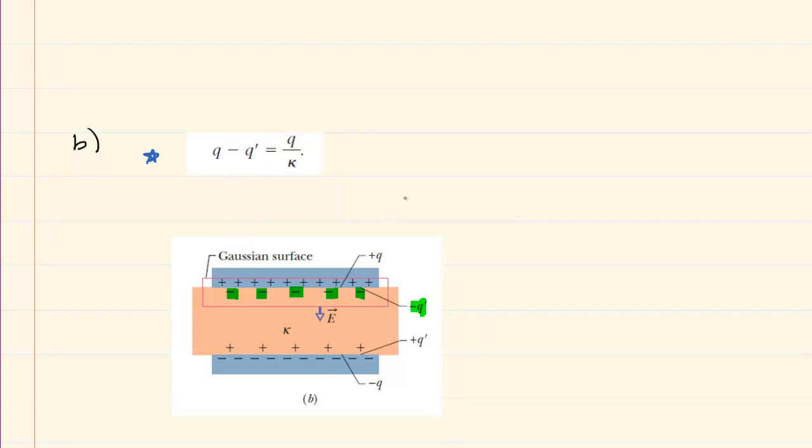So what we're going to do is solve this equation for Q prime. Perhaps we can begin to do that by subtracting Q from both sides of the equation. So we would have negative Q prime is equal to Q over kappa minus Q. We would then divide both sides of the equation by negative 1. Make sure you divide each term by negative 1.